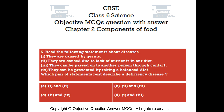Question number 5. Read the following statements about diseases: 1. They are caused by germs. 2. They are caused due to lack of nutrients in our diet. 3. They can be passed on to another person through contact. 4. They can be prevented by taking a balanced diet. Which pair of statements best describes a deficiency disease? Option A: 1 and 2. Option B: 2 and 3. Option C: 2 and 4. Option D: 1 and 3.